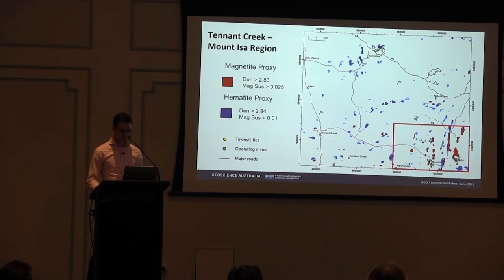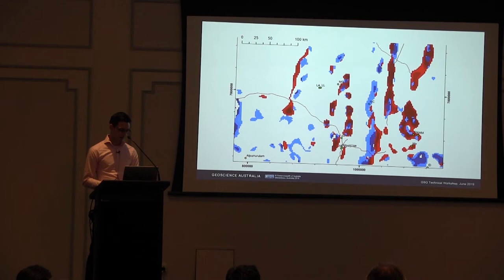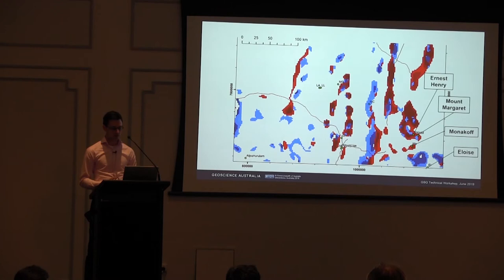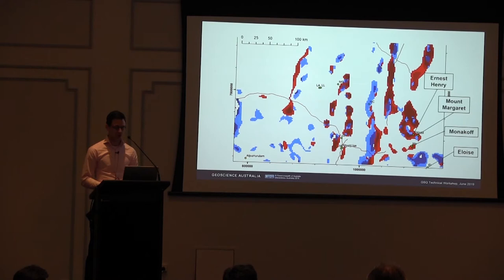I'm going to show one particular area of interest around Mount Isa. Shown in brown are some of the major roads, and in blue are operating mines in the area. What was very encouraging is that three deposits — Ernest Henry, Mount Margaret, and Monacoff — all lie within one of these magnetite alteration proxy zones. In the case of Ernest Henry and Mount Margaret, they also lie directly adjacent to those blue cells, which are the hematite alteration proxy. Unfortunately Eloise falls just outside the model area.